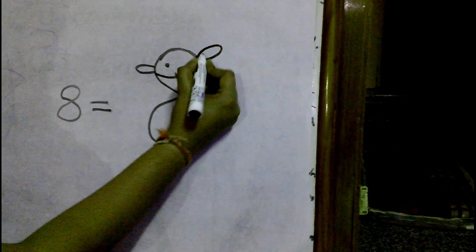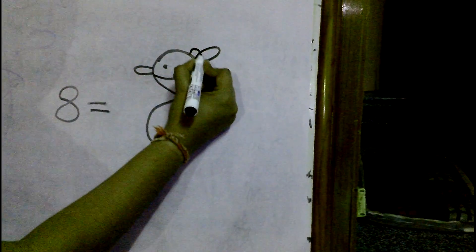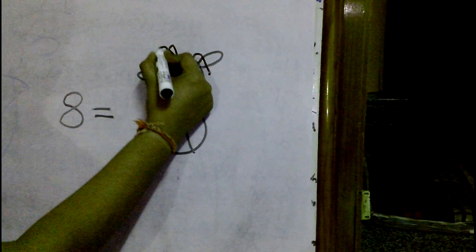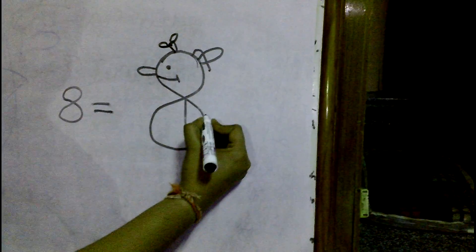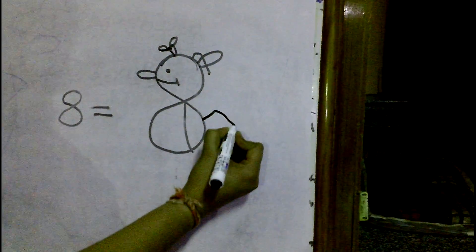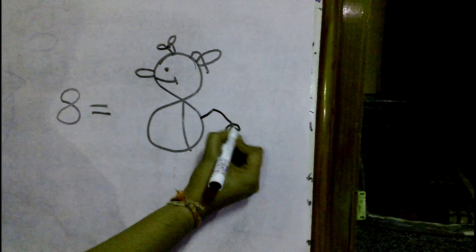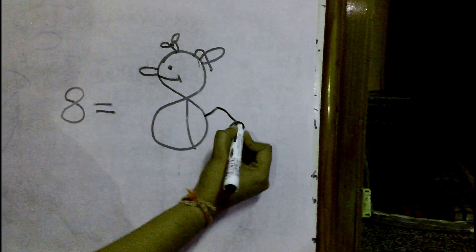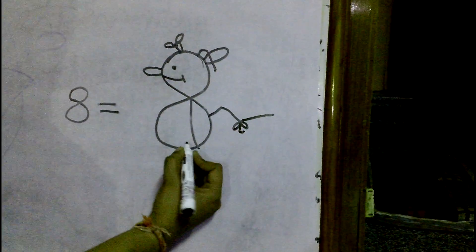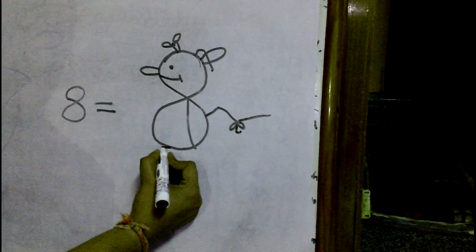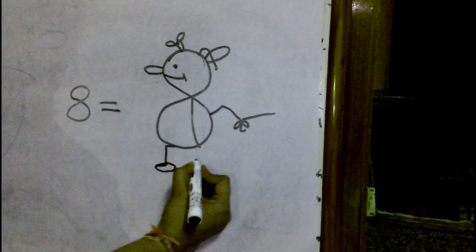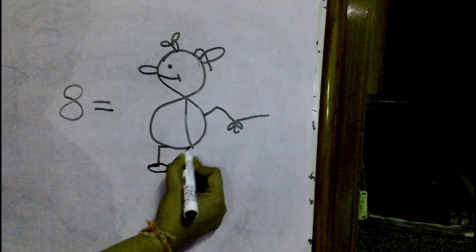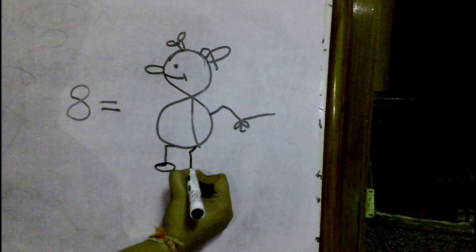We are going to draw 9 and 0. At the same time we have to think about the snowman. The snowman's face is very confusing.